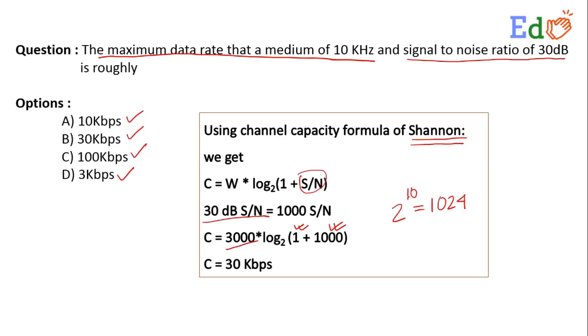If you can consider them as 2 to the power of 10, in that case log of this to the base 2 will produce the value 10 here. So this 3000 into 10 we are having as 30000 and that is 30 kbps will be the respective answer.